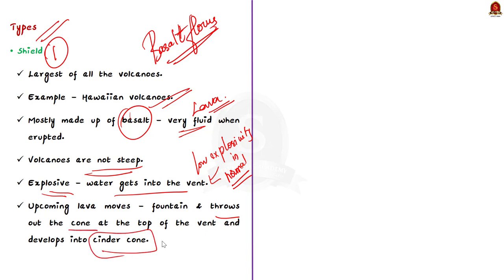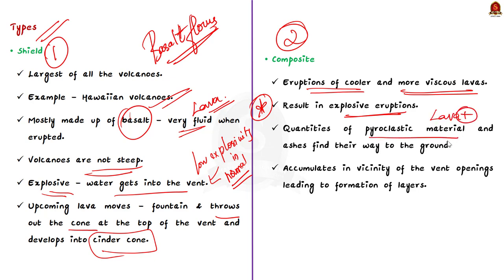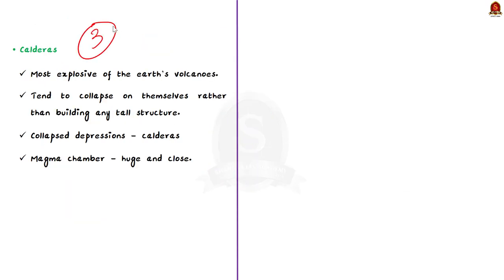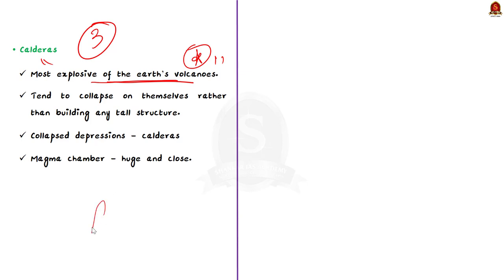The second type is composite volcanoes. These volcanoes are characterized by eruptions of cooler and more viscous lavas than basalt, and these volcanoes often result in explosive eruptions. Along with the lava, large quantities of pyroclastic material and ashes find their way to the ground. This material accumulates in the vicinity of the vent openings leading to the formation of layers, making the mounds appear as composite volcanoes. The third type is the caldera — these are the most explosive of the earth's volcanoes. They are usually so explosive that when they erupt, they tend to collapse on themselves rather than building any tall structure. The collapsed depressions are called calderas.